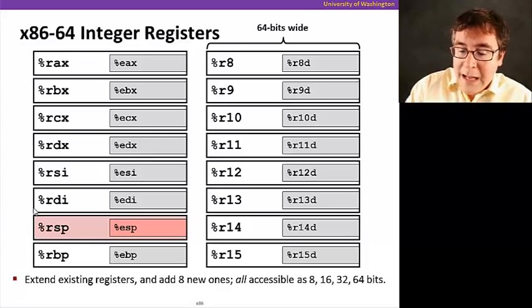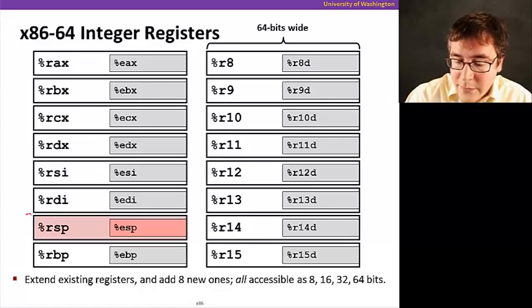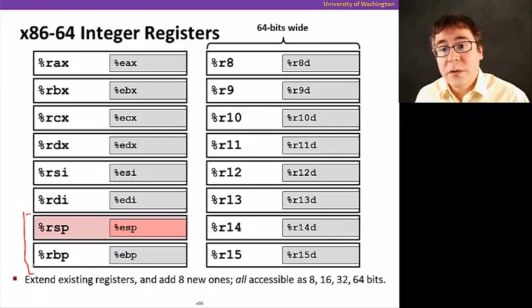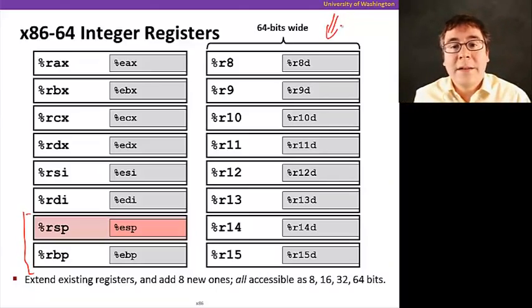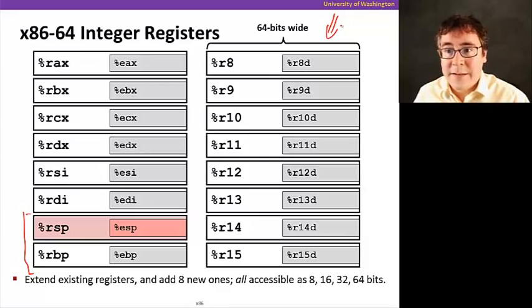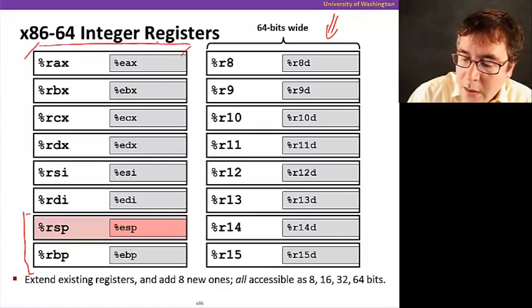X86-64 has 16 registers. Just like IA32, there's some registers that have special use, but there's a lot more general purpose registers. All of these registers here are only present in the 64-bit version of X86. And also know that while these registers are 64 bits wide, you can also access the lower 32 bits of them as a register as well.